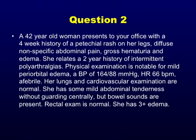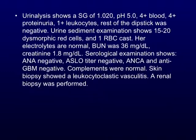Question 2. A 42-year-old woman presents with a 4-week history of a petechial rash on her legs, diffuse non-specific abdominal pain, gross hematuria, and edema. She has a 2-year history of intermittent polyarthralgias. Physical exam shows mild periorbital edema, blood pressure 164 over 88, heart rate 66, afebrile. Mild abdominal tenderness centrally with bowel sounds present, rectal exam normal, 3-plus edema. Urinalysis shows specific gravity 1020, pH 5, 4-plus blood, 4-plus proteinuria, 1-plus leukocytes. BUN 36, creatinine 1.8, serological examination all negative.